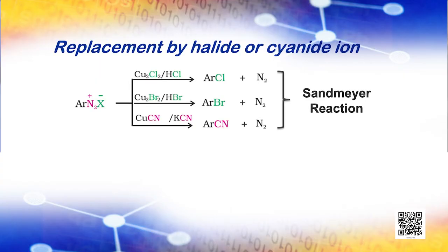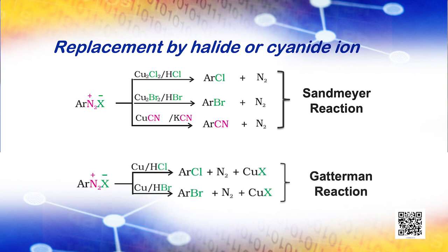Replacement by halide or cyanide ion: The chloride, bromide and cyanide nucleophiles can easily be introduced in the benzene ring in the presence of Cu⁺ ions. This reaction is called the Sandmeyer reaction. Alternatively, chlorine or bromine can also be introduced in the benzene ring by treating the diazonium salt solution with the corresponding halogen acid in the presence of copper powder. This is referred to as the Gattermann reaction. The yield in the Sandmeyer reaction is found to be better than the Gattermann reaction.